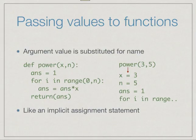We have seen that we pass values to functions by substituting values for the arguments that define the function, and this is effectively the same as having an implicit assignment. When we say power(x,n) and call it with values 3 and 5, then we have the assignment x equal to 3 and n equal to 5.